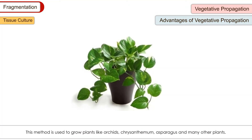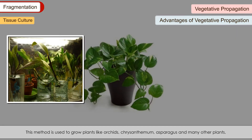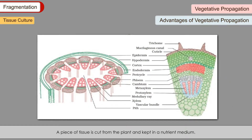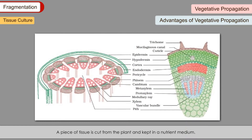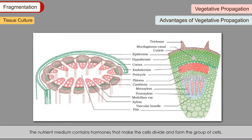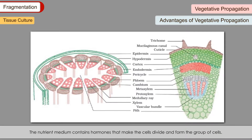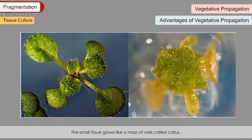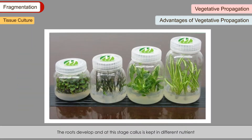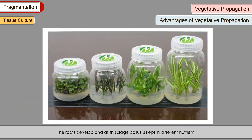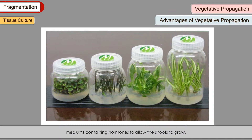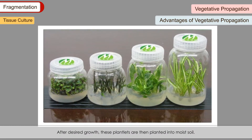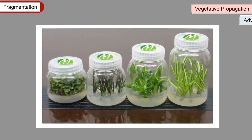Tissue Culture: This method is used to grow plants like orchids, chrysanthemum, asparagus and many other plants. A piece of tissue is cut from the plant and kept in a nutrient medium. The nutrient medium contains hormones that make the cells divide and form a group of cells. The small tissue grows like a mass of cells called callus. Roots develop, and at this stage callus is kept in different nutrient mediums containing hormones to allow shoots to grow. After desired growth, these plantlets are then planted into moist soil.